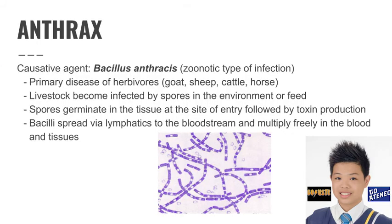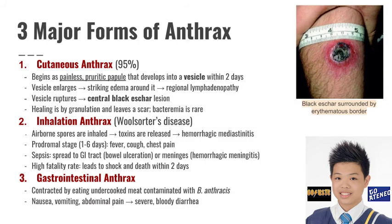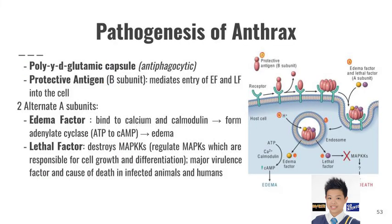Anthrax causative agent is Bacillus anthracis, a zoonotic type of infection. Infected by spores, bacilli spread via lymphatics to the bloodstream and multiply freely in the blood and tissues. The three major forms are: cutaneous anthrax, also known as the central black eschar lesion; inhalational anthrax, also known as woolsorters' disease; and gastrointestinal anthrax, which involves severe bloody diarrhea. For pathogenesis, edema factor causes edema, and lethal factor is the major virulence factor and cause of death in infected animals and humans.